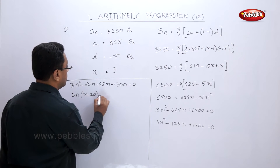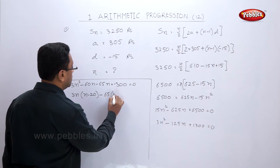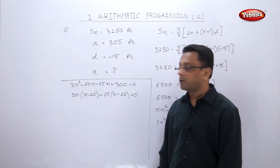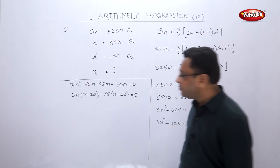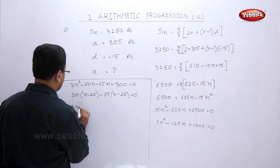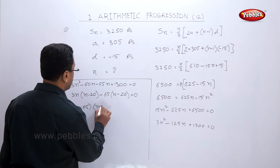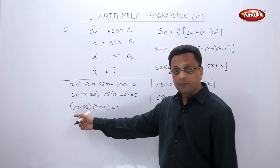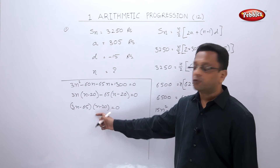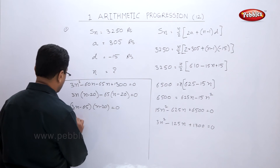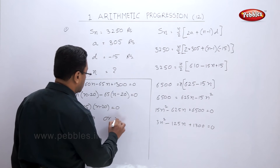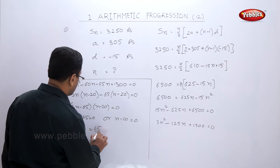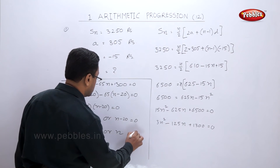Taking common factors: 3n(n − 20) − 65(n − 20) = 0, so (n − 20)(3n − 65) = 0. Therefore either 3n − 65 = 0 or n − 20 = 0, giving n = 65/3 or n = 20.